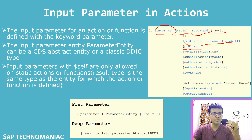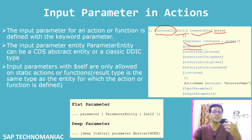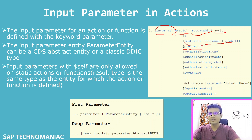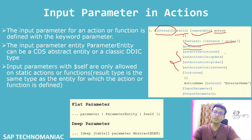Before triggering the action, that pre-check method will be triggered first, and then the action will be triggered. After that you have to define the authorization. You can use the same authorization which you have declared on update, global, or instance.